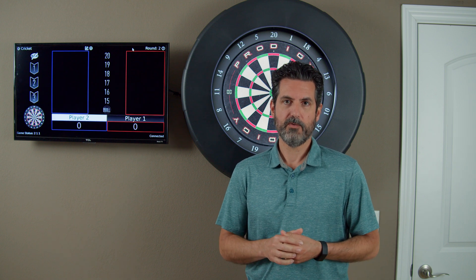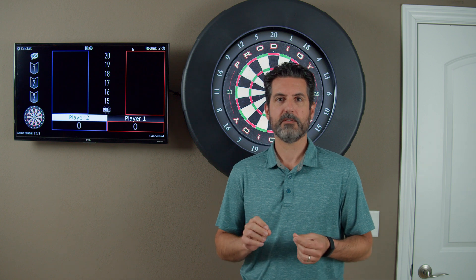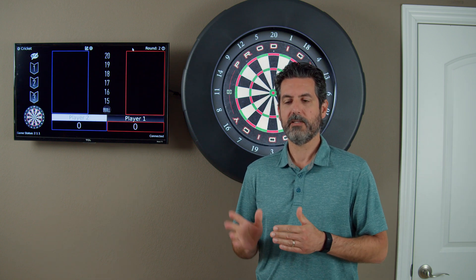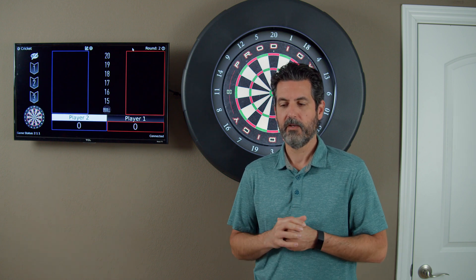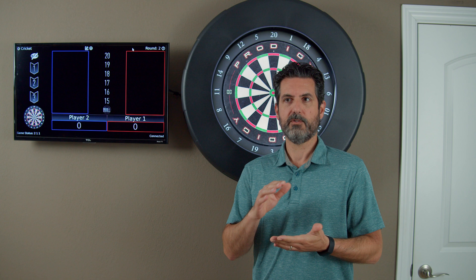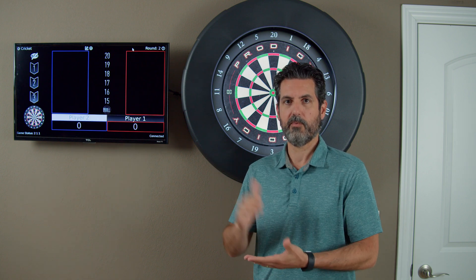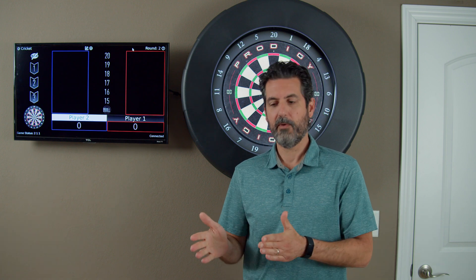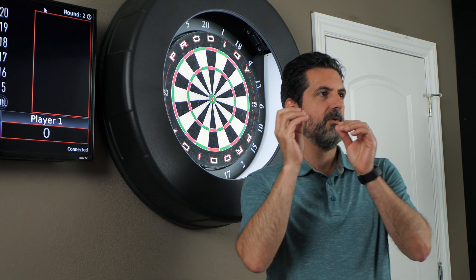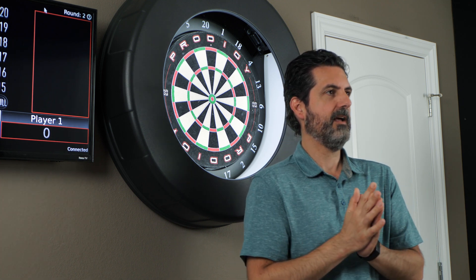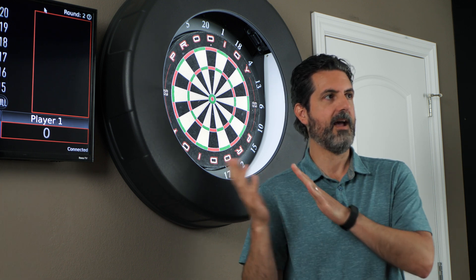The Prodigy operates in two different modes. One is access point mode, the other is client mode. When it ships, it is in access point mode, which means it is sending out a Wi-Fi signal that you can connect your smart device to. The problem with that is you will not have any internet access on your device because you're connected just to the board. That's where client mode comes in, allowing you to connect your board to the Wi-Fi in your house and your device to your Wi-Fi in your house, so you'll have internet access and access to the board.